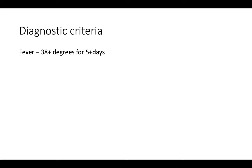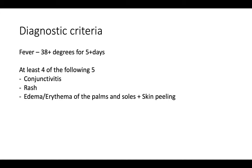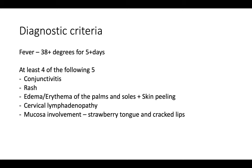For diagnosis, the main requirement is a continuous fever, and then you need four of the following five features from the CREAM mnemonic: conjunctivitis, rash, edema, lymphadenopathy, and mucosal involvement. You can also be diagnosed if you have a positive ECHO with fewer than four features. There is also something called incomplete Kawasaki disease, which is having a fever with fewer than four of the five criteria along with a raised CRP.